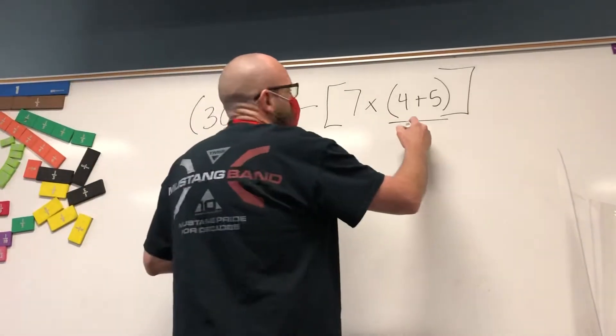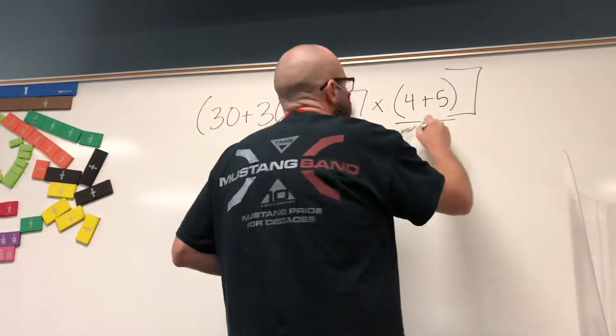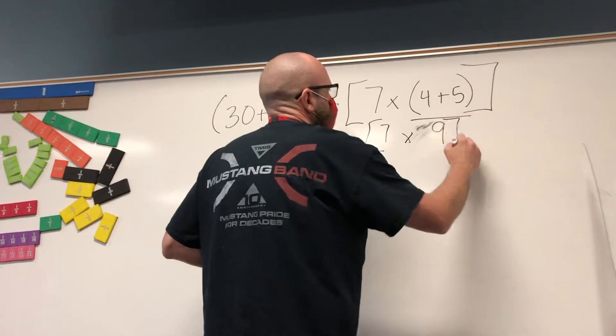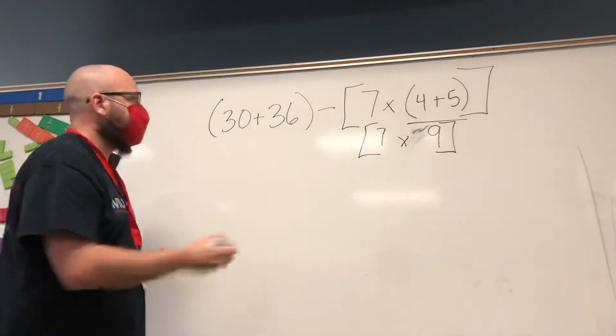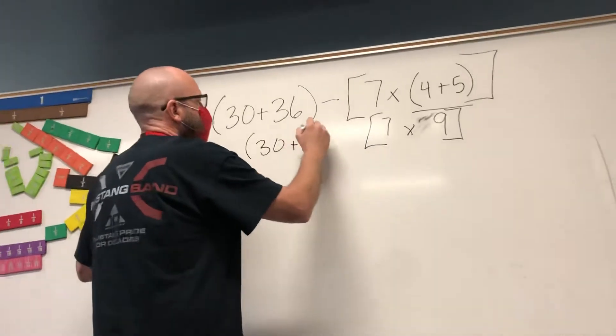We have 4 plus 5, and 4 plus 5 is 9. So now inside the brackets we have 7 times 9. We haven't done this yet, so I'm going to bring this down so I don't lose it.